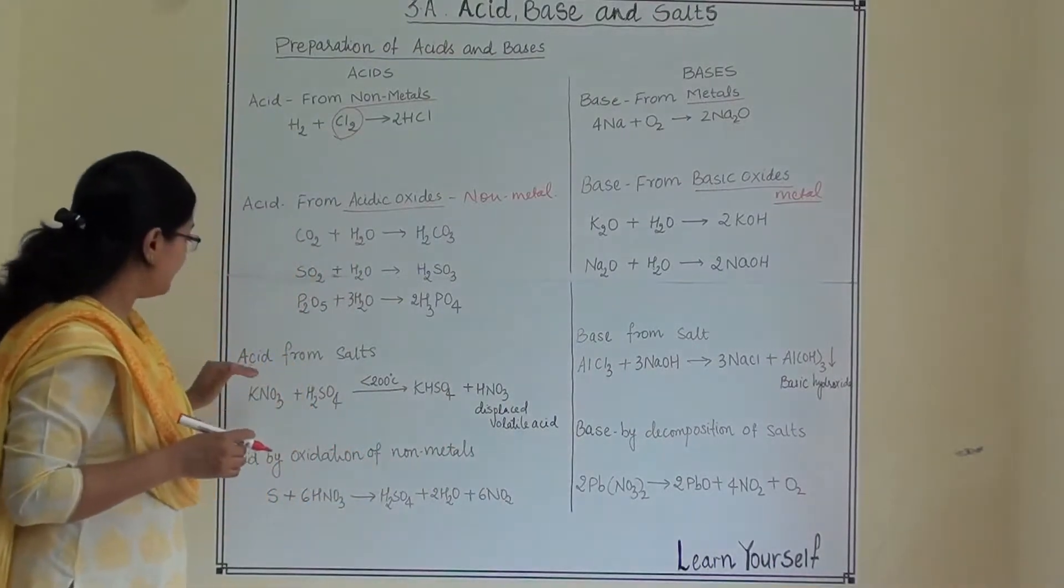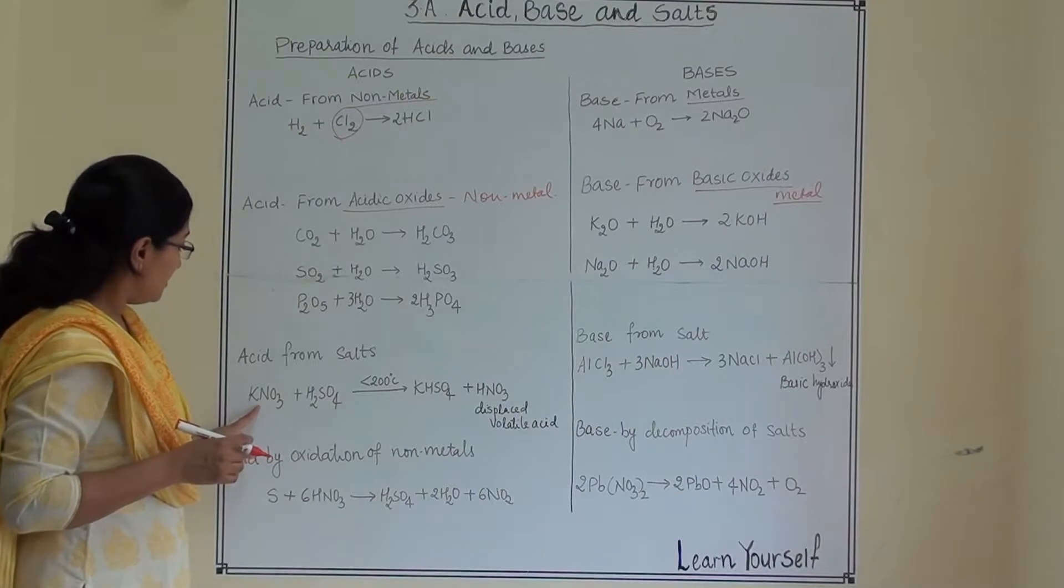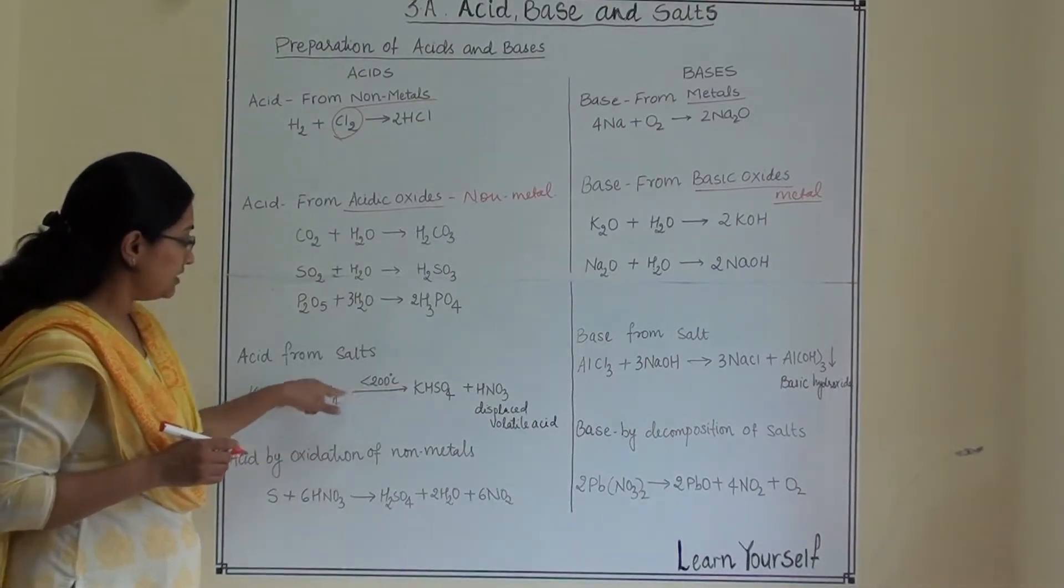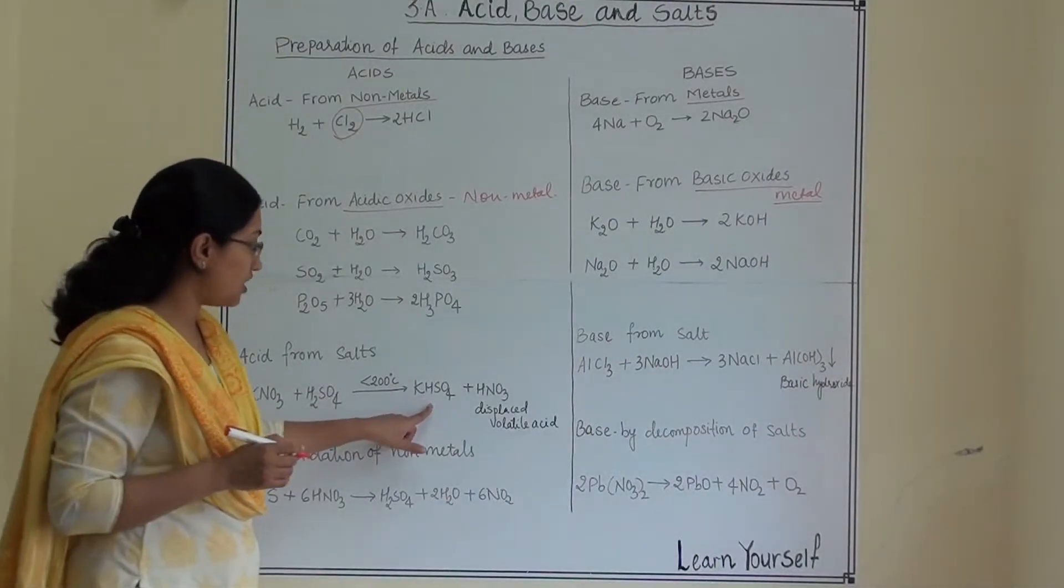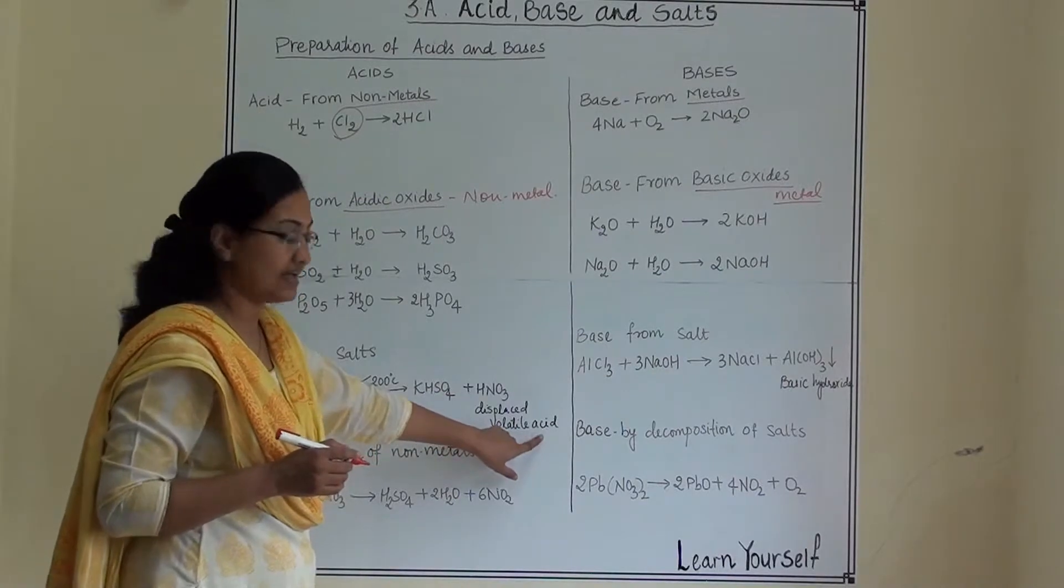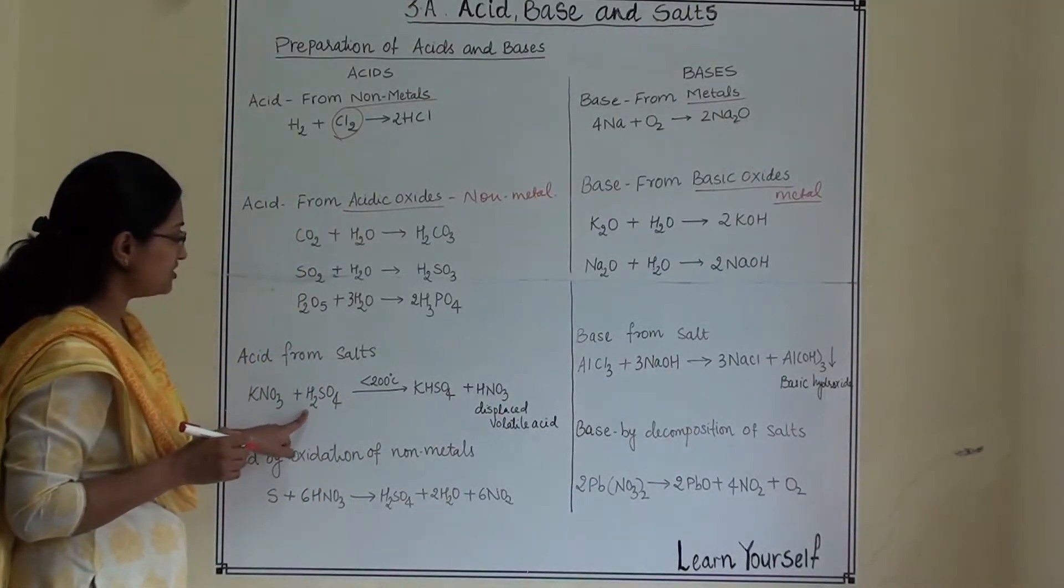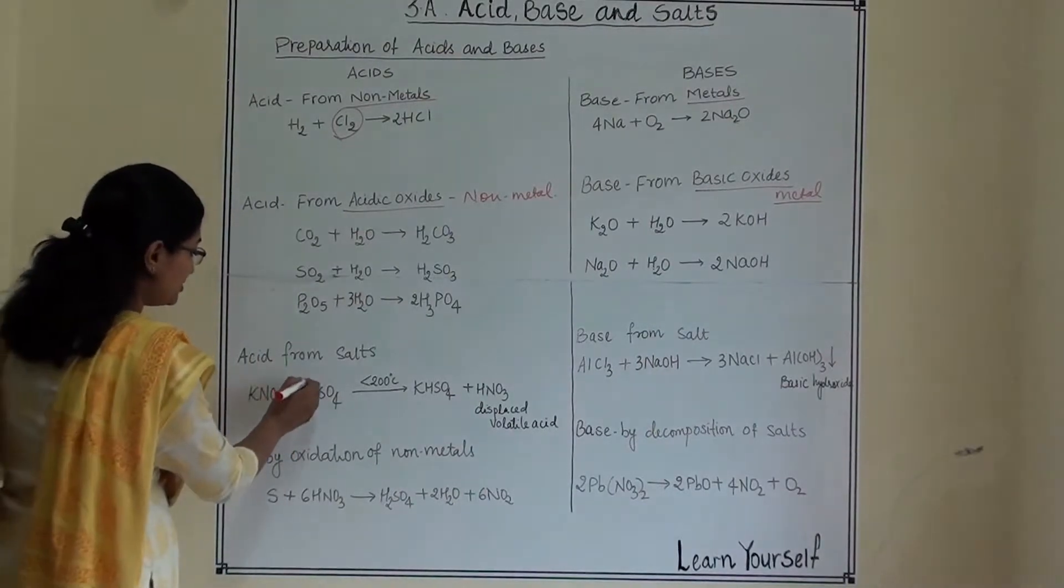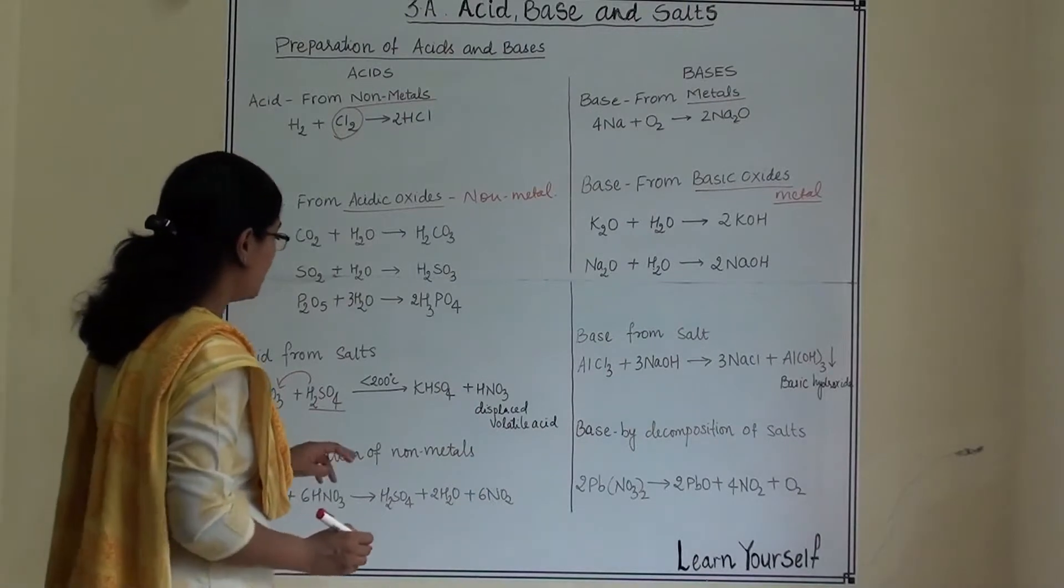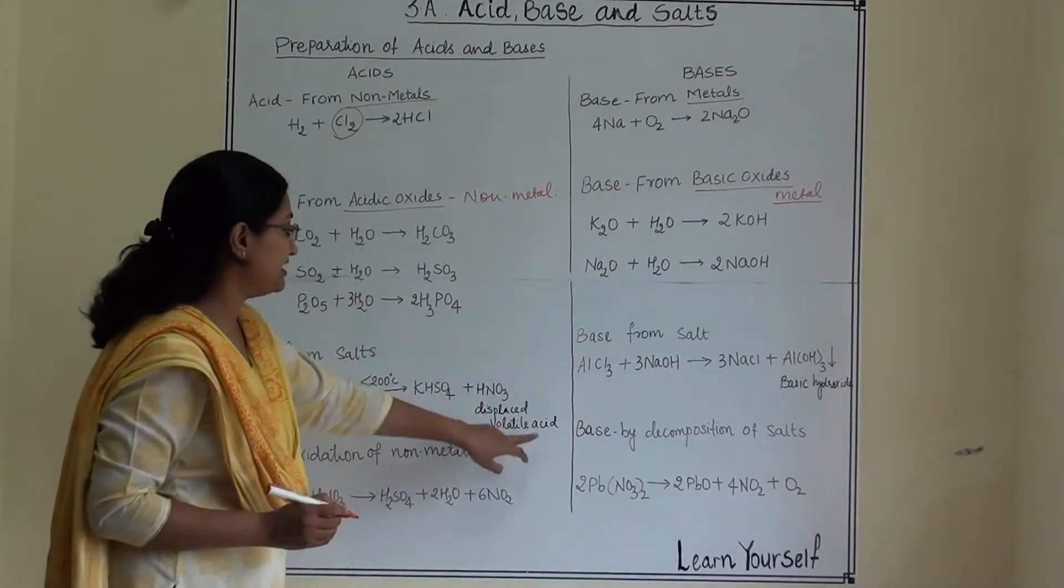Third type, acid from salts. When potassium nitrate react with acid in the presence of heat it gives us salt and it displaced volatile acid. From where it will displace? This hydrogen it will displace. So one hydrogen will go with this and one hydrogen will remain over here. So it will be displaced volatile acid.